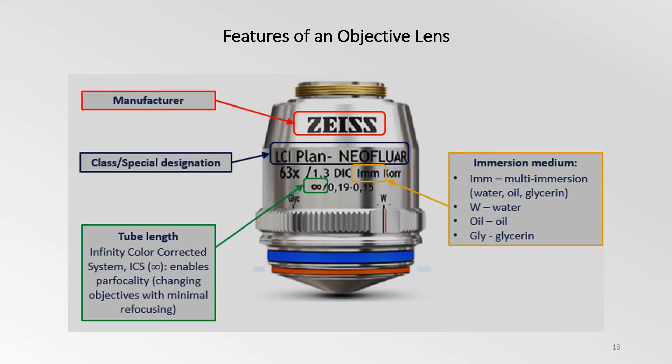There are a number of markings on the barrel of a microscope objective lens that contain the specifications necessary to determine what the objective is designed for. These include the manufacturer, the class or special designation, which indicates the optical corrections offered by the objective. The infinity mark inscribed on the objective refers to an infinity corrected objective, which allows the insertion of optical components in the microscope system without affecting focusing.